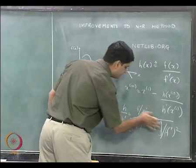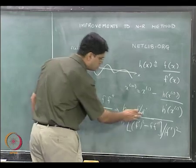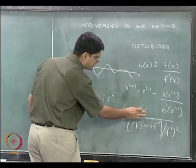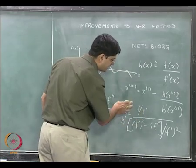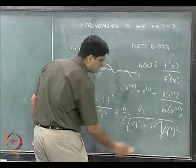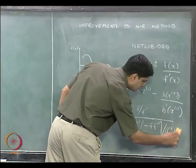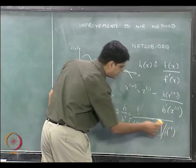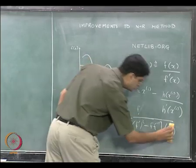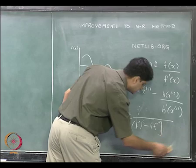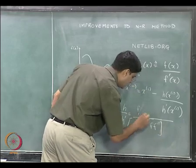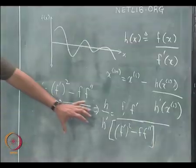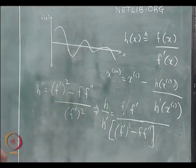You take the f' squared to the numerator and you will get f', and one of the f' terms will get cancelled. So this will get cancelled along with this, and then when you take f' onto the numerator, you will essentially get f'. So this is going to be our h divided by h'.